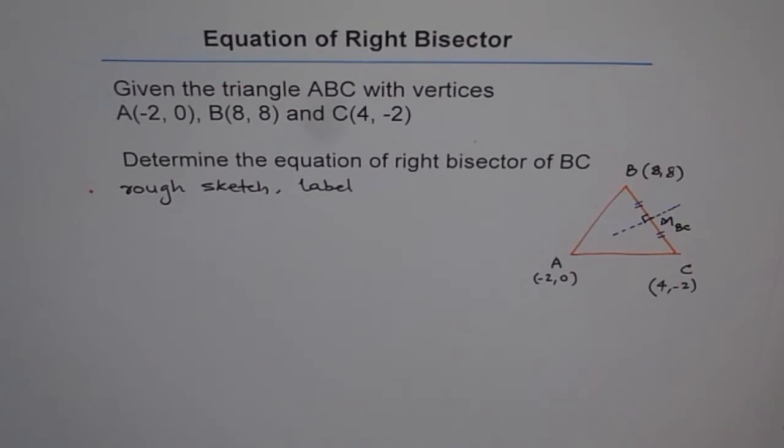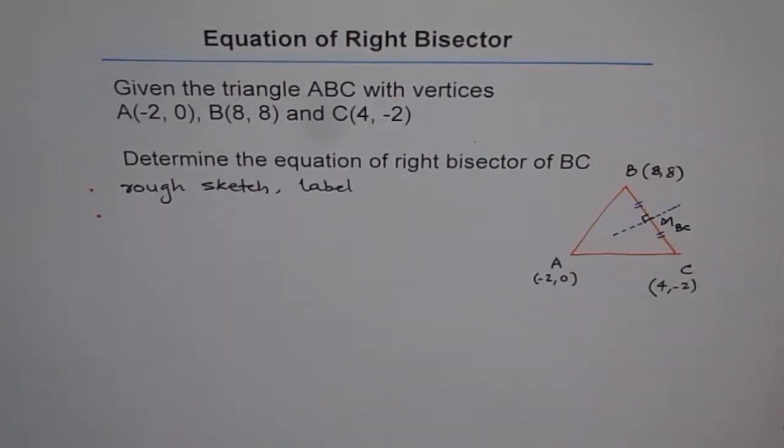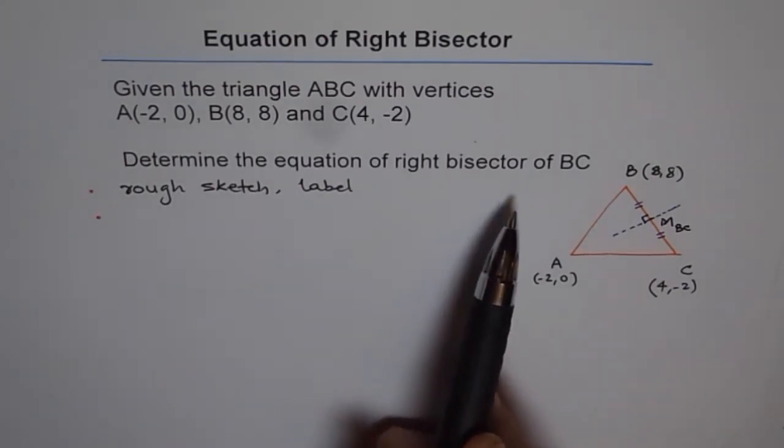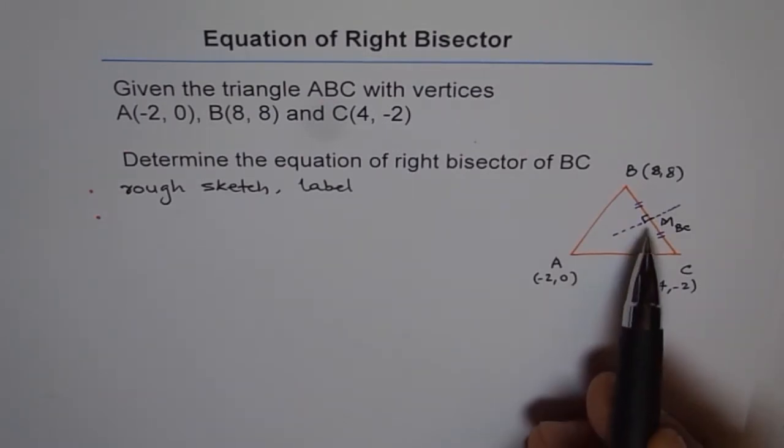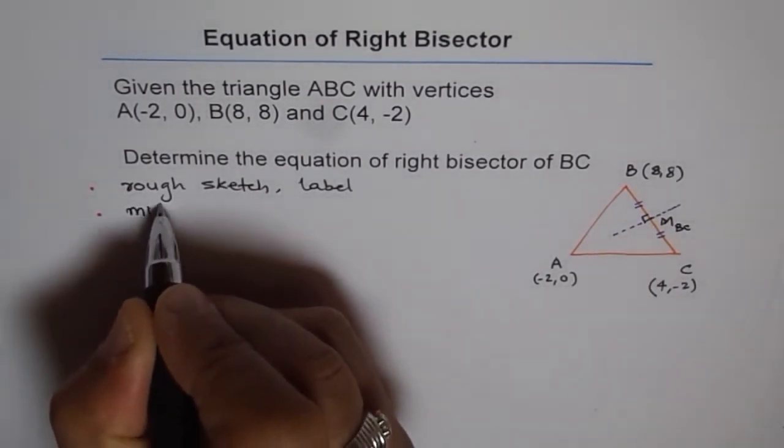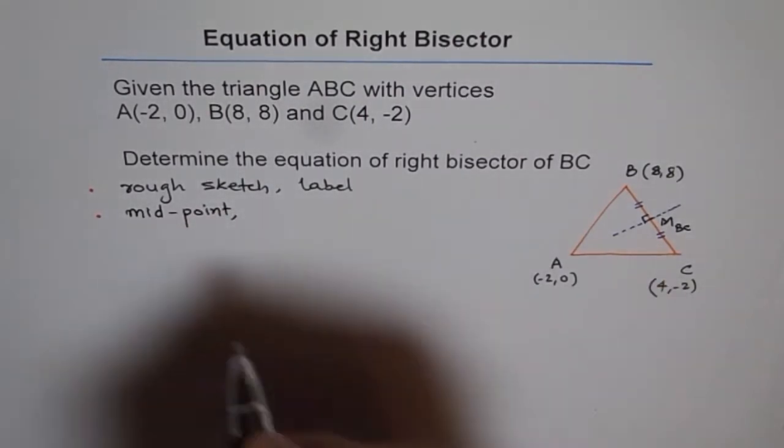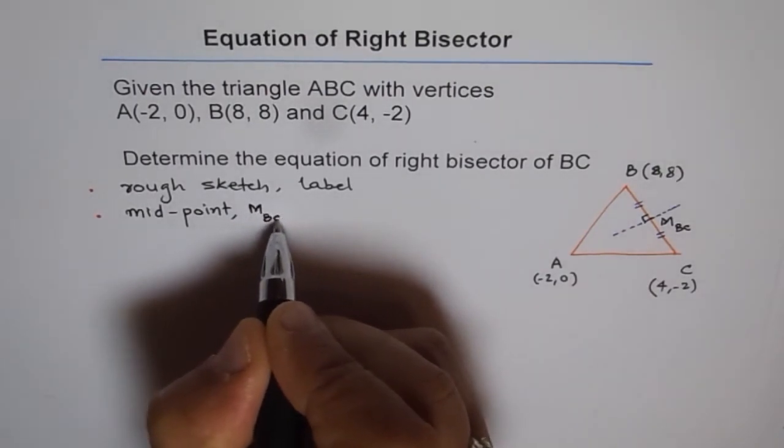So first step is rough sketch. Label it. Try to understand the situation. Next step is do what is required. First step we should do is we need to find the right bisector of BC. That means first we should find the midpoint. So calculate midpoint. So we are calling this midpoint as midpoint M of segment BC.